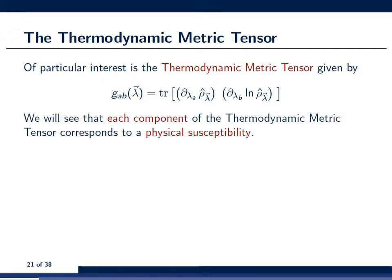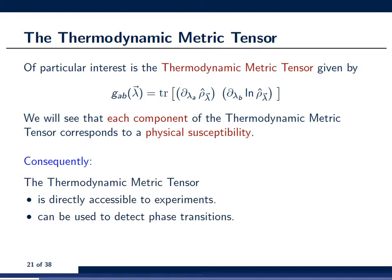So first and foremost, the main reason is that each component of this thermodynamic metric tensor corresponds to physical susceptibility of the system. Now what this means is that it can first of all be directly accessed in experiments and second of all at least detect phase transitions that occur on a non-topological basis.